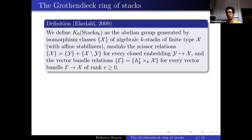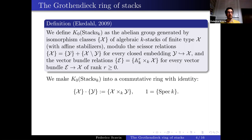This extra relation was automatic for varieties, but it's not automatic in K0 of stacks, because vector bundles on stacks are not necessarily Zariski locally trivial. For example, even BG, which is just a point topologically, can have non-trivial vector bundles — they correspond to non-trivial representations of G. The condition of affine stabilizers tells us that any such stack has a stratification by quotient stacks.